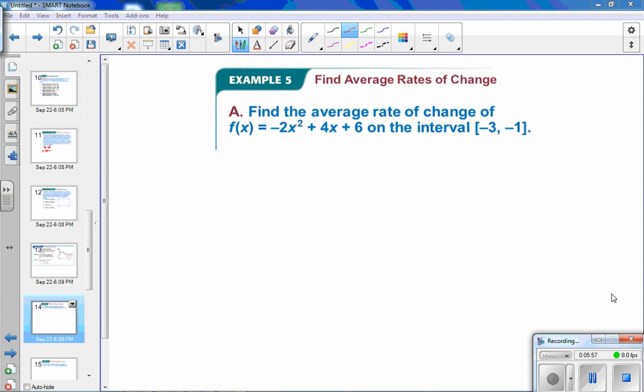So for this example, we're finding the average rate of change on the interval from negative 3 to negative 1. So what we're going to do to find that, it's just the slope. We want to find the slope of the secant line.